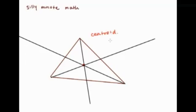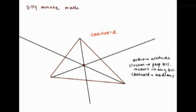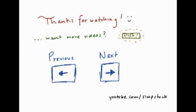There are four different types of concurrency. Want to know some cool properties of the centroid? See how it divides each median into two parts? The longer side is always double the shorter side. So if this is x, this is y, and this is z, then this is 2z.